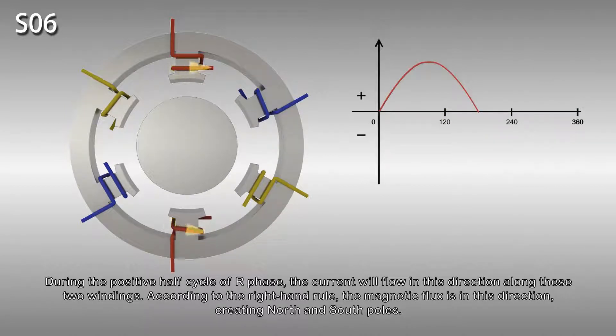During the positive half cycle of the R phase, the current will flow in this direction along these two windings. According to the right-hand rule, the magnetic flux is in the direction shown creating north and south poles.